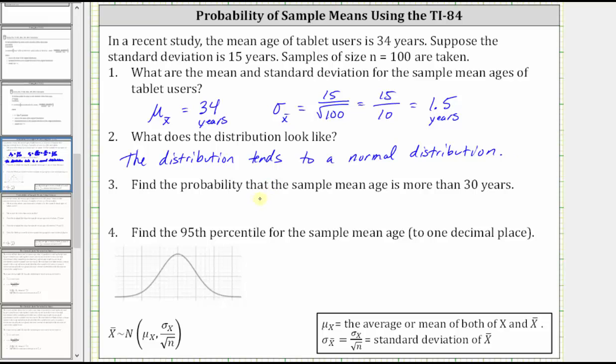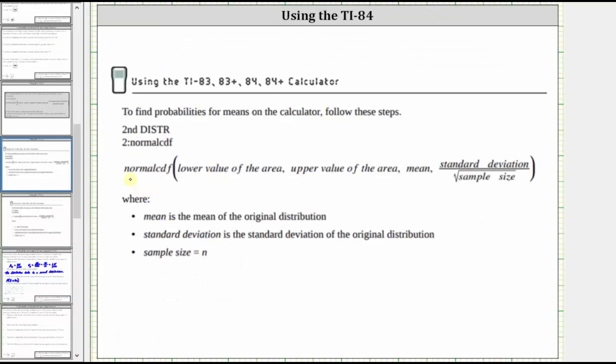Number three, what is the probability that the sample mean age is more than 30 years? We can indicate this as the probability that x̄ is greater than 30. And now to determine this probability on the TI-84, we use the normal CDF function, and then we enter the lower value of the area, the upper value of the area, the mean, and then the standard deviation of the sample distribution, which is the standard deviation of the population divided by the square root of the sample size.